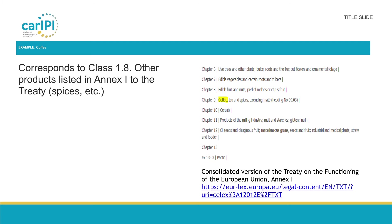Here is an example for coffee. In the case of coffee, the product category would correspond to class 1.8 — other products listed in Annex 1 to the Treaty. If you consult the text of the Treaty on the Functioning of the EU in Annex 1, you can see that coffee is listed, so this type of product would be acceptable.